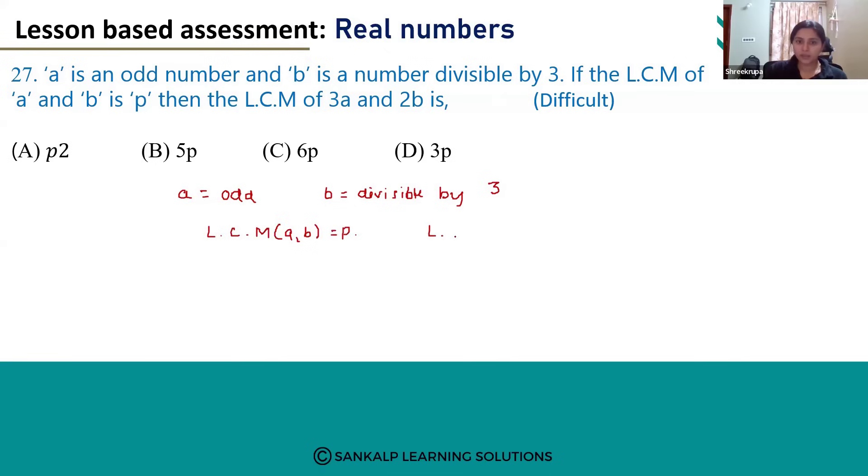So we have to find out the LCM of 3A and 2B. Here we can write this as LCM of 3 into A and 2 into B, and we can use the multiplicative property.